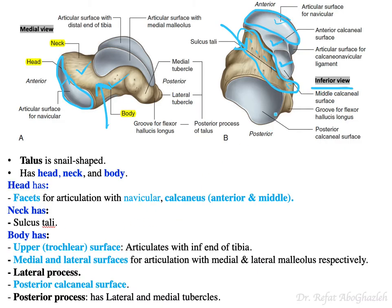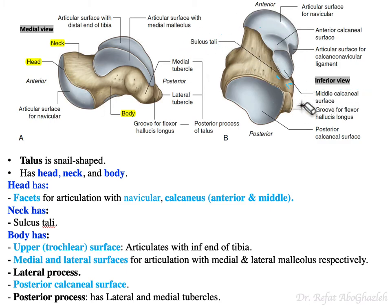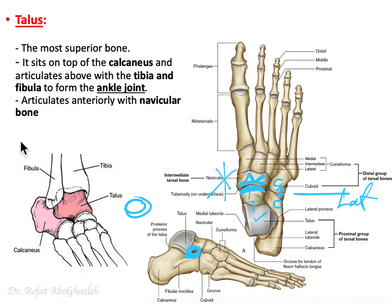This is the sulcus tali — named because it is related to the talus bone. Now, shifting to the body of the talus: we know it articulates with the tibia and fibula, so those articular surfaces are located here on the body.